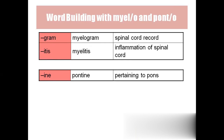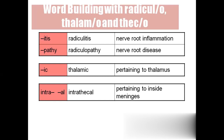Myelogram: the spinal cord recording. Myelitis: inflammation of the spinal cord. Pontine: pertaining to the pons. Radiculitis: inflammation of the nerve root. Radiculopathy: nerve root disease. Thalamic: pertaining to the thalamus. Intrathecal: pertaining to inside the meninges, because theca means meninges.